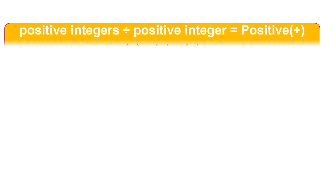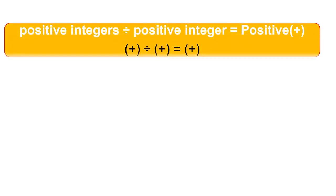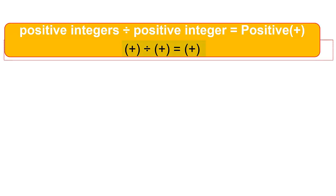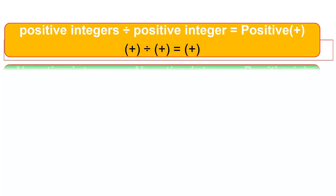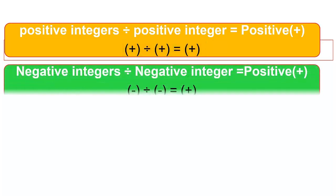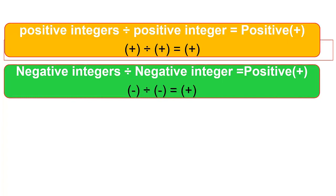Positive integer divided by positive integer gives positive — that is plus divided by plus equals plus. Negative integer divided by negative integer gives positive — that is minus divided by minus gives us positive.